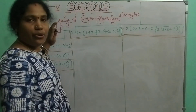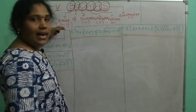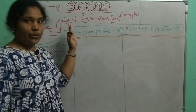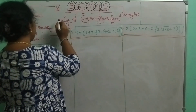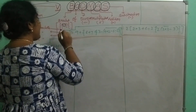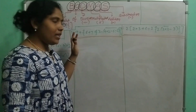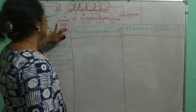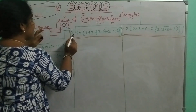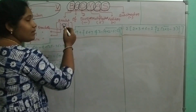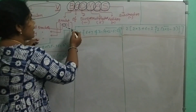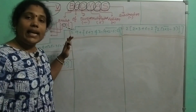Let's talk about brackets. There are three types of brackets. First, there is the line bracket — also called the vinculum. Then you have small brackets, which are the circular or round brackets. Then you have curly brackets. And finally, you have square brackets. So we have three types of brackets in total.